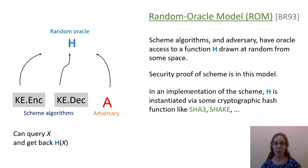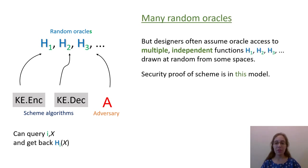Recall that here, scheme algorithms as well as the adversary are given oracle access to the random oracle H. This oracle is a function drawn at random from some space. Parties can query x and get back H of x. When it comes time to implement this scheme, the random oracle is built from some cryptographic hash function. In the most basic version of the model, shown on the prior slide, there is only one random oracle.